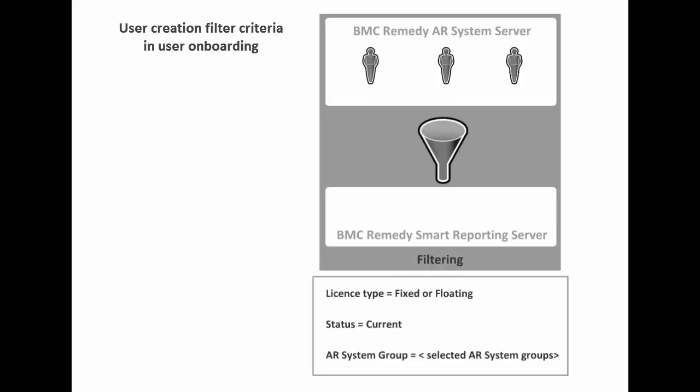The onboarding process includes user creation filter criteria, which is an inbuilt filter that imports only those users that have a fixed or floating license type and current status. In addition, you can apply the AR system group filter to import users from specific AR system groups, except from the computed group. If you do not select any AR system group filter, users are imported based only on the inbuilt user creation filter criteria.